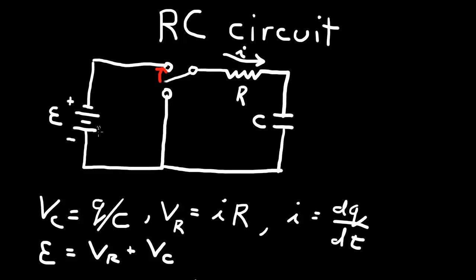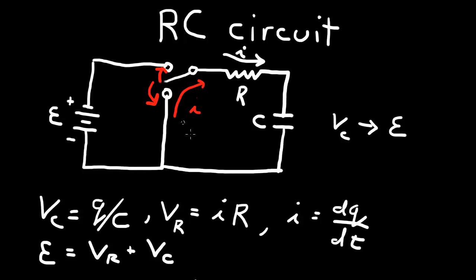Now let's say we've waited long enough so the capacitor is fully charged, so Vc has gone to E. We now throw the switch in the opposite direction. This disconnects the battery, so the current flows in the reverse direction around the closed loop with just the resistor and capacitor. Applying Kirchhoff's law to this loop, there is no external EMF, so the voltage across the resistor plus the voltage across the capacitor equals zero.